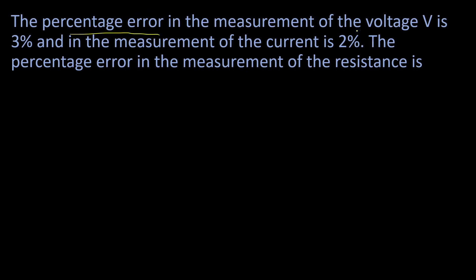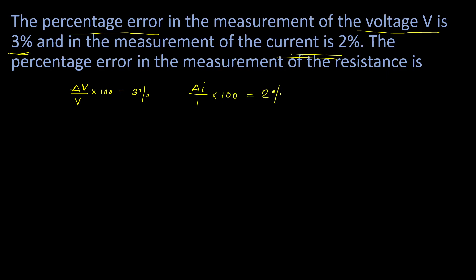Next question: the percentage error in measurement of voltage is 3%, meaning (delta V / V) × 100 equals 3%. The percentage error in measurement of current is 2%, meaning (delta I / I) × 100 equals 2%. Find the percentage error in measurement of resistance using V equals I times R.